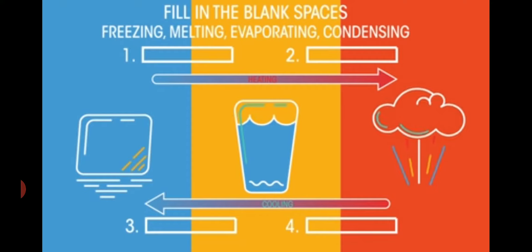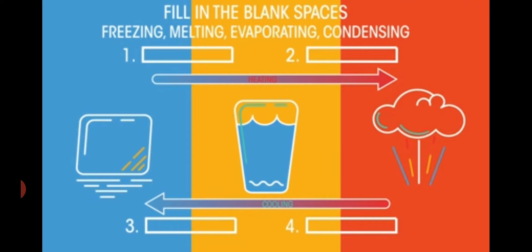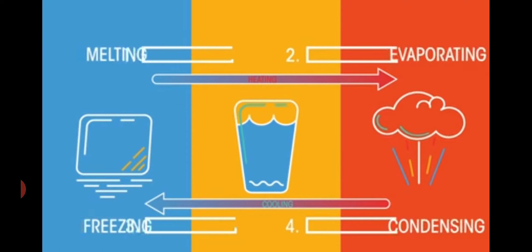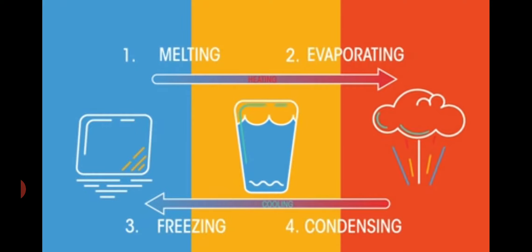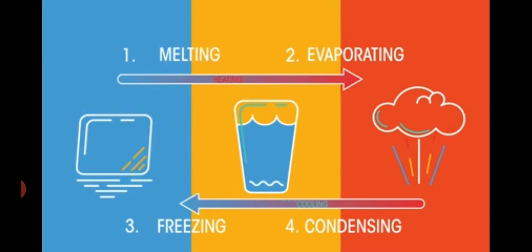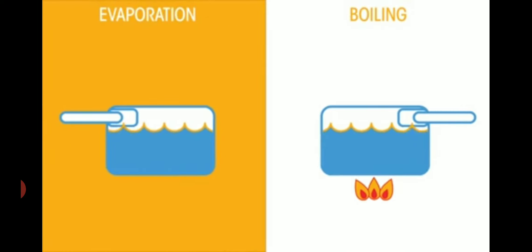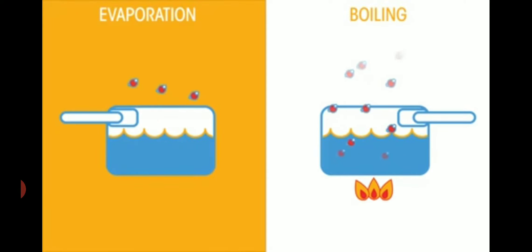So, if we want to convert a solid to liquid and liquid to gas, we have to provide heat — that is melting and evaporation. Gas to liquid is condensation, and liquid to solid is called freezing.